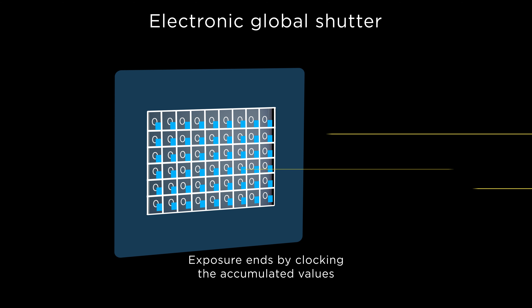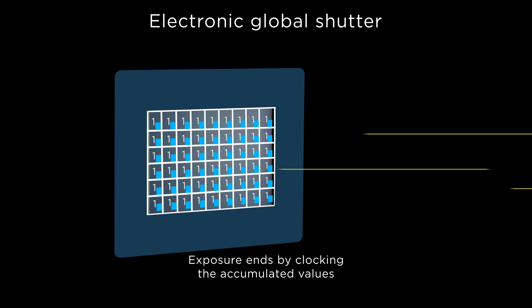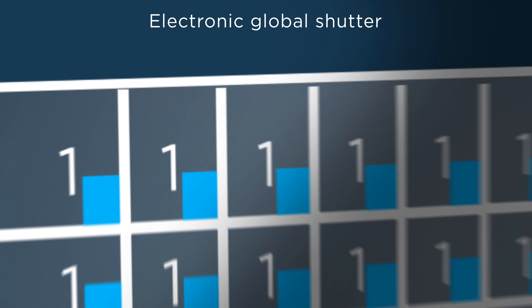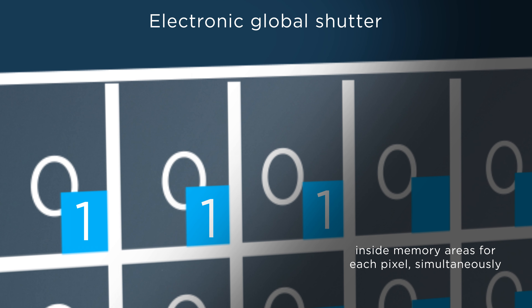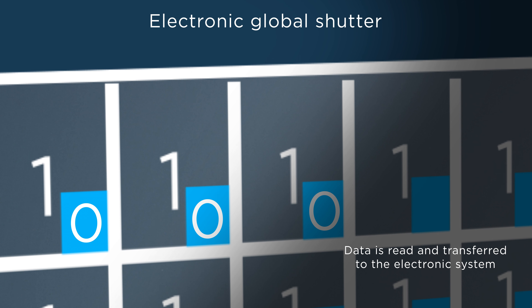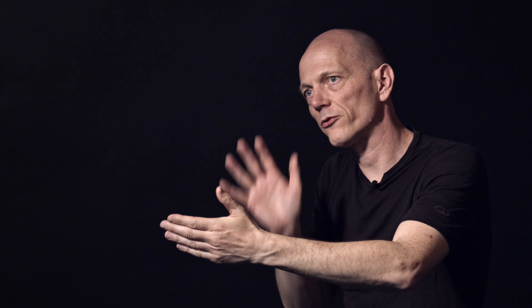With an electronic global shutter, the exposure is started by resetting all the pixels across the entire sensor at the same time. The exposure is then ended by clocking the accumulated pixel values into little memory areas inside each pixel simultaneously for all pixels. After that, the data in all these memory areas can be read out and transferred to the electronic system.